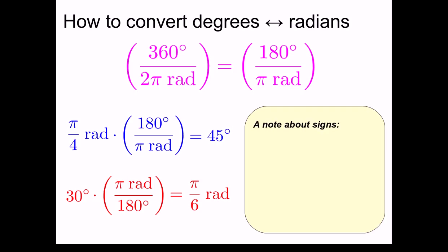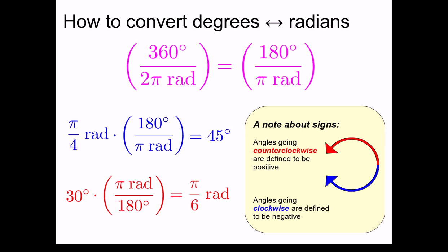Here I would like to make a note about the signs of our angles. Angles that go counterclockwise, such as this red arrow, will be defined to be positive, while angles that go clockwise will be defined to be negative. We will use this convention throughout our study of rotation. So these two angles, the red arrow and the blue arrow, have the same magnitude, but opposite signs.